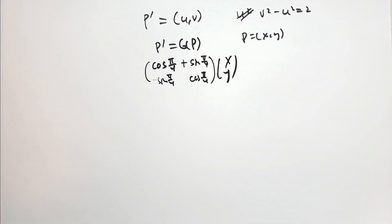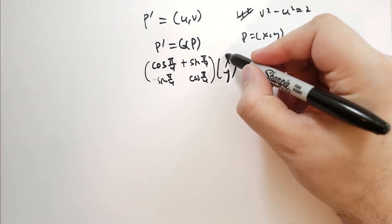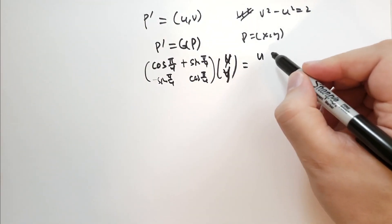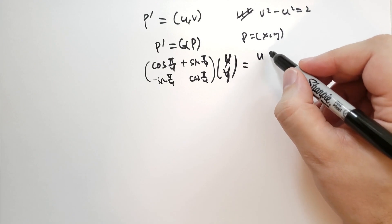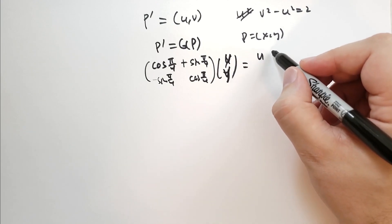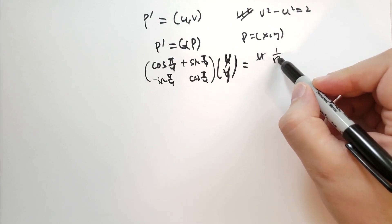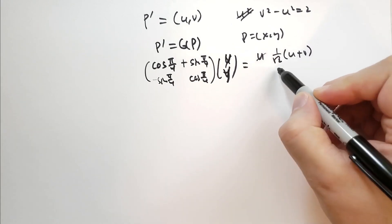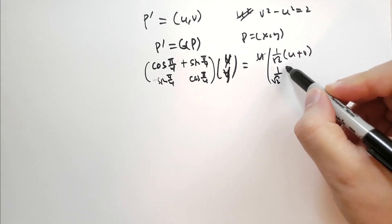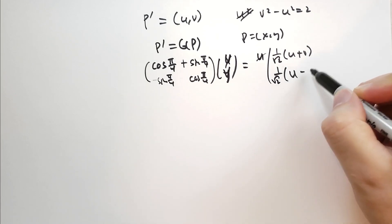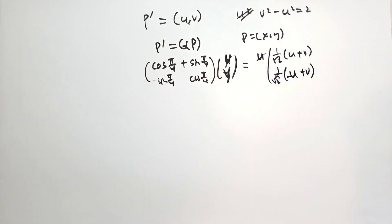He does u, v. So we get u times, this is 1 over root of 2, obviously. So 1 over root of 2 u plus v, and then 1 over root of 2 minus u plus v.